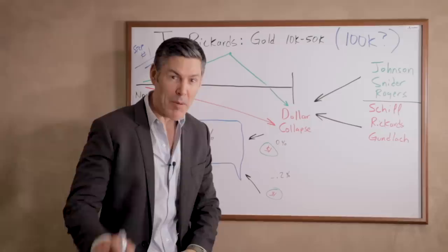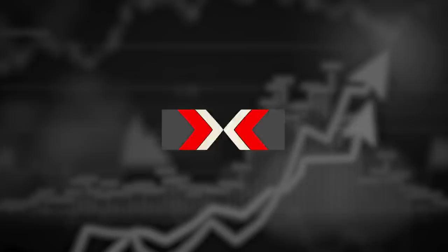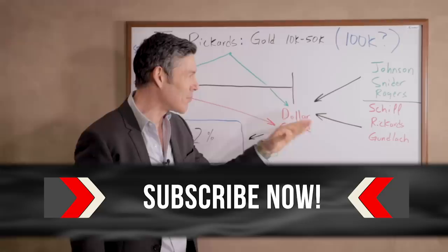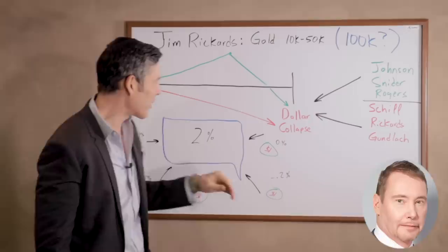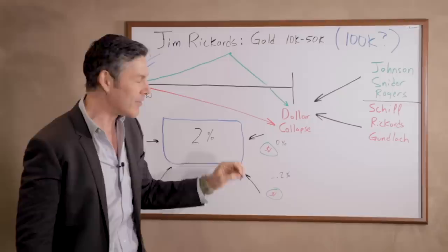We're going to go over the dollar collapse. You've got two schools of thought with really smart guys on each side of the equation. Guys like Brent Johnson, Jeff Snyder, and Jim Rogers think that the dollar is going to go up first. Guys like Schiff, Rickards, and Gunlock think that the dollar is going to go straight down. But one thing they all agree on is that the endgame for the United States dollar is a collapse.